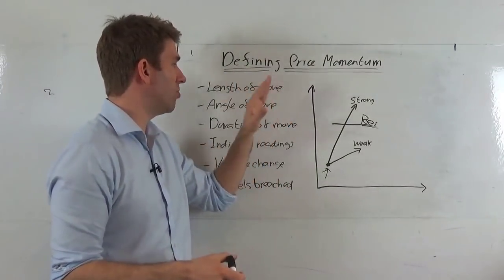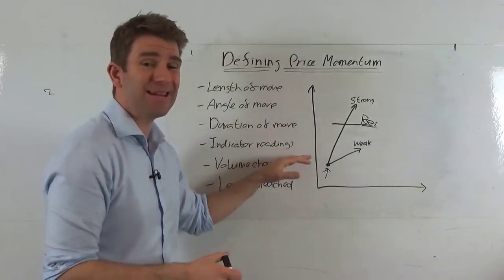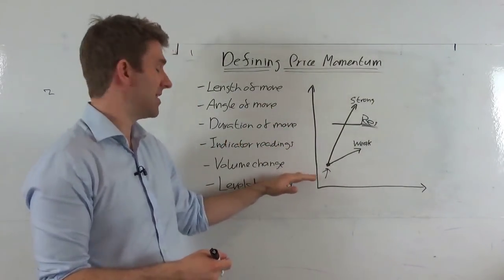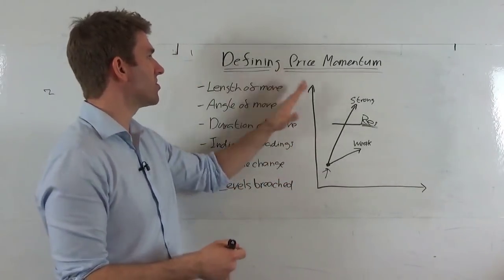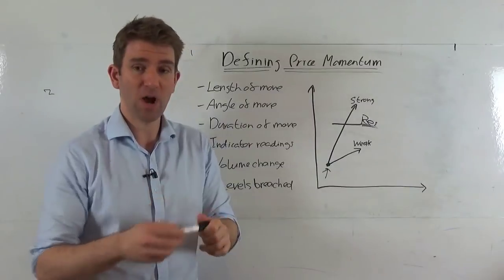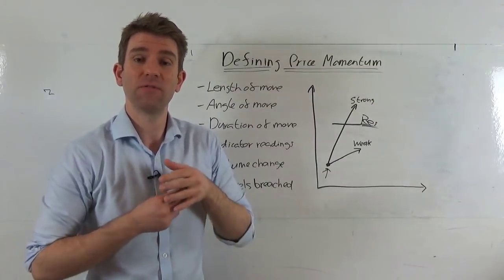So if we see that, we see a strong angle move with good length and good duration. Indicator readings are all very extreme. Volume has gotten way more than it has in the average, and levels are breached. Generally, the sign is going to be that you've got good, strong, solid price momentum, and you want to position yourself accordingly.